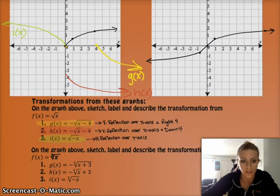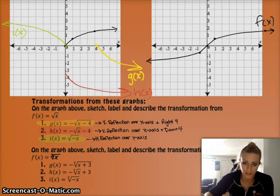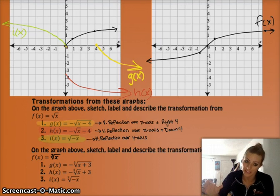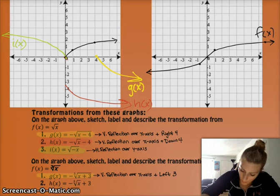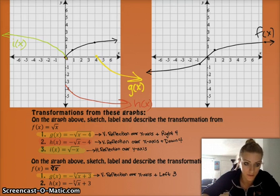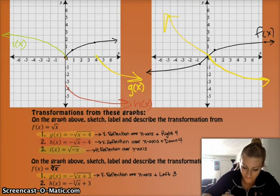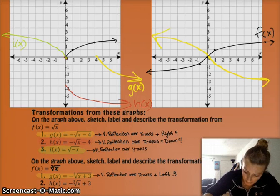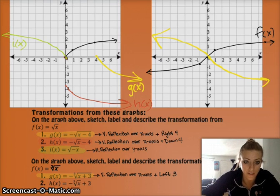We can do the same thing for the cube root function. My original function is the cube root of x, graphed on the right set of axes. Then g(x) is going to be a transformation of that — a negative out front gives a reflection over the x-axis, and then x plus 3 on the inside means it's a horizontal change to the left 3 (opposite of what you'd think). So let's sketch that. The point (0, 0) stays there, but the point (1, 1) is reflected down to (1, negative 1), and the other one goes up to positive 1. After the reflection it looks like that, and then we move it left 3. There's a sketch of g(x).